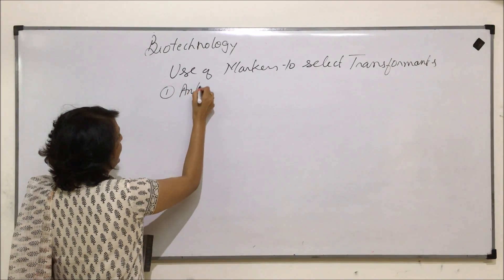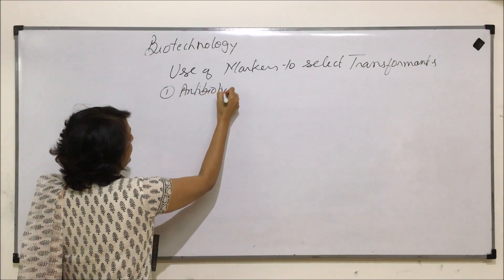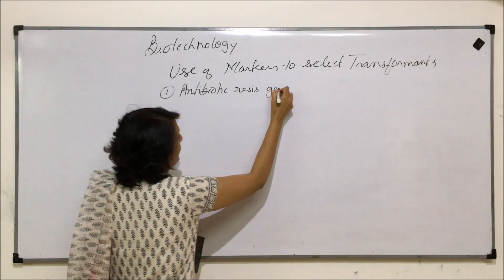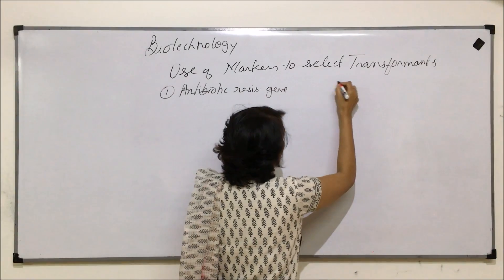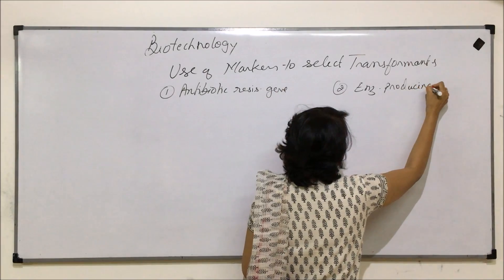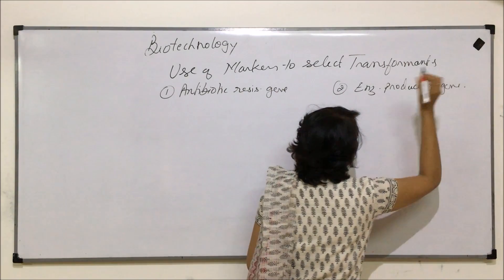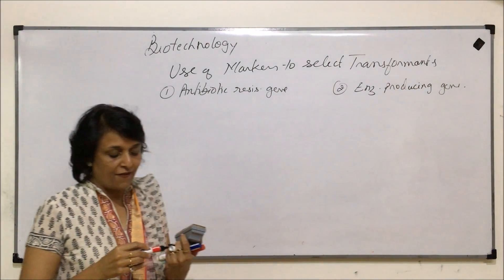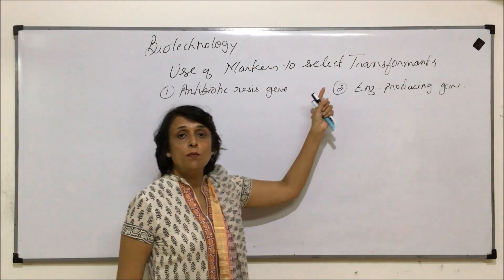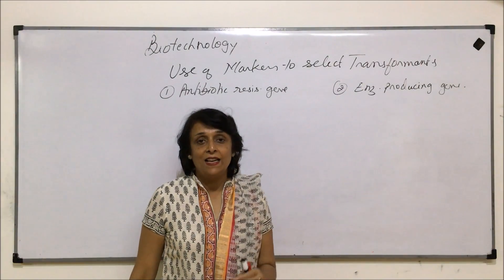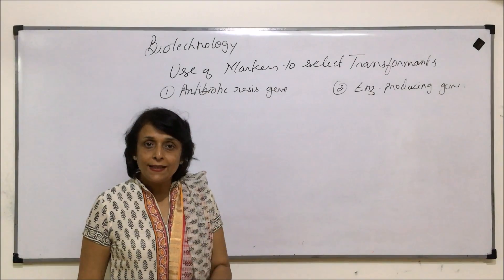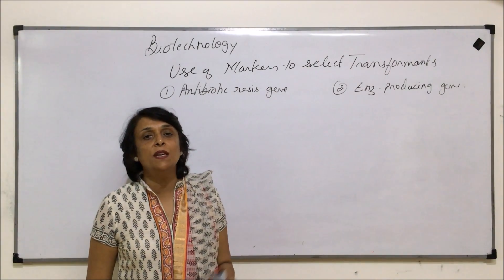First is the antibiotic resistance gene, and then we will talk of the enzyme-producing gene and how we will use these two things to identify our transformant. A transformant is the cell into which the new gene — a foreign gene or that desired gene of ours — has been introduced.